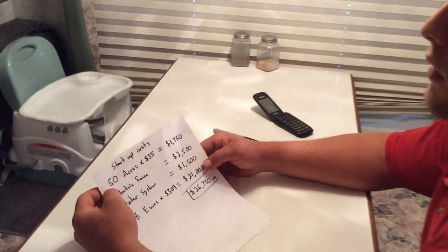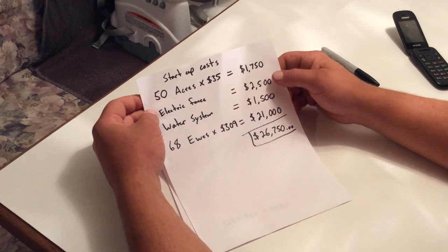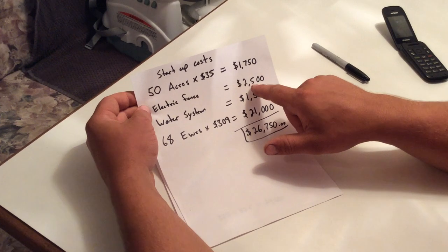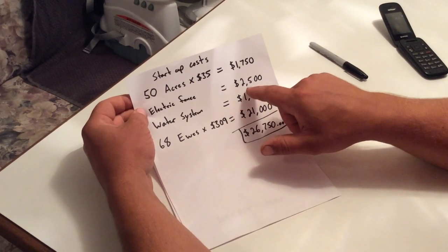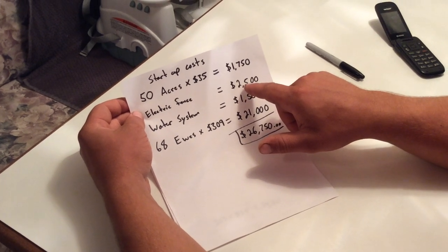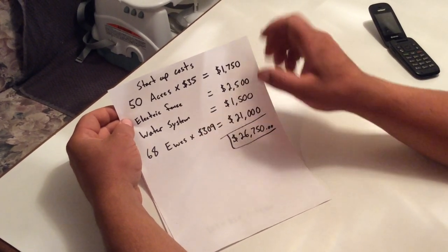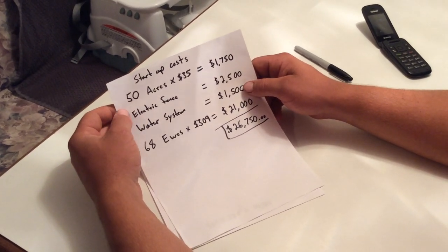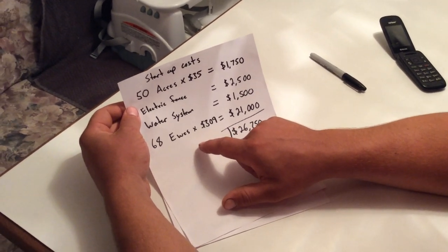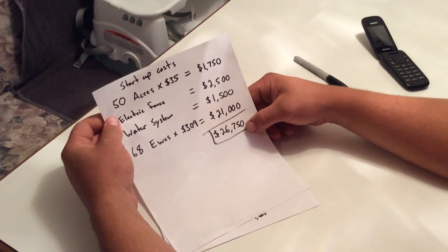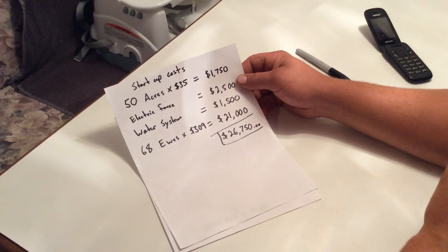Anyway, so our startup costs so far, we're renting about 50 acres, $35 an acre. That comes out to $1,750. We've got about $2,500 in electric fence that we set up on that 50 acres so that we could run our sheep efficiently and keep them in. And that includes a really good energizer because that was really important for sheep to make sure the fence is really hot. We've got about $1,500 in our water system because we had to buy a pump and a bunch of pipe. And then we paid about $309 each for 68 ewes. So that's $21,000. And that all comes out to $26,750 that we have into our sheep operation so far.